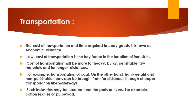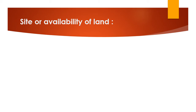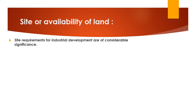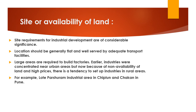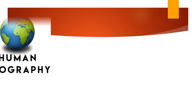The next physical factor is site, or availability of land. Flat locations with good transportation facilities are preferred for the construction of industries. Historically, industries were concentrated near urban areas, but due to non-availability of land and high prices there, there is now a tendency to set up industries in rural areas. Examples include the Latepur-Swaram industrial area in Chiplun and Chakan.